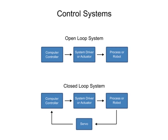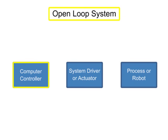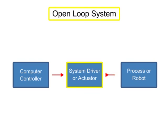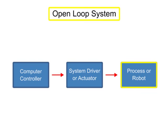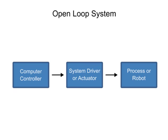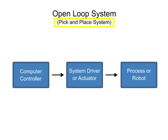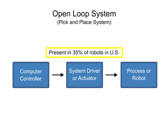There are different types of control systems used in robotics. In open-loop control, the computer sends signals based on the current state without taking into account feedback from the system. This type of system is also called non-servo or pick and place, and is used in about 35% of the robots in the United States.